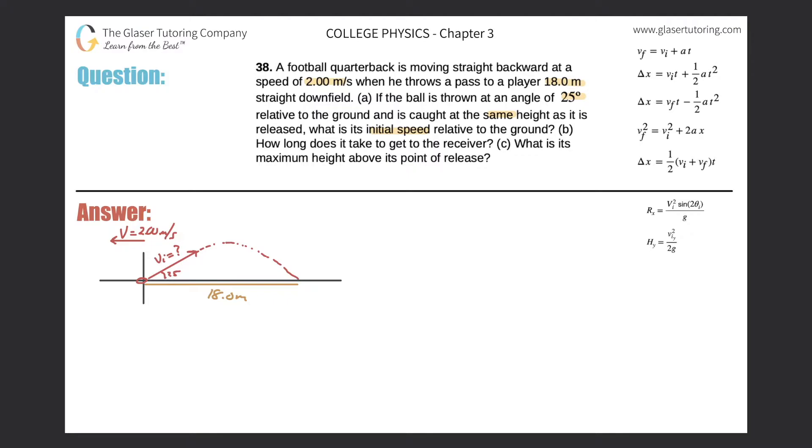This first part of the problem could be a little confusing because they say that he is moving backward at 2 meters per second. Now he throws the ball and we might think to ourselves, well, that must play into the calculation somehow, but it actually doesn't. And the reason why it doesn't, let's take a look at the picture I drew. In order to cover the distance of 18 meters, the ball is going to be passed at an angle of 25 degrees above the horizontal. It's going to have some initial velocity imparted to it.